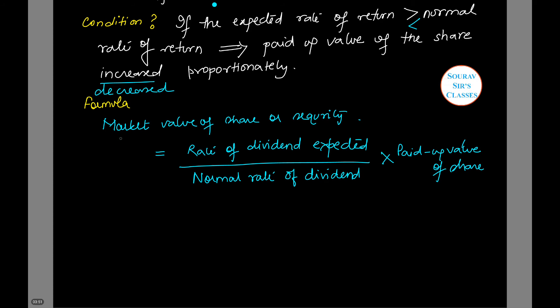Now, this particular market value of share can also be calculated using dividend per share divided by normal rate of dividend, multiplied by 100. This will give me the market value of shares.